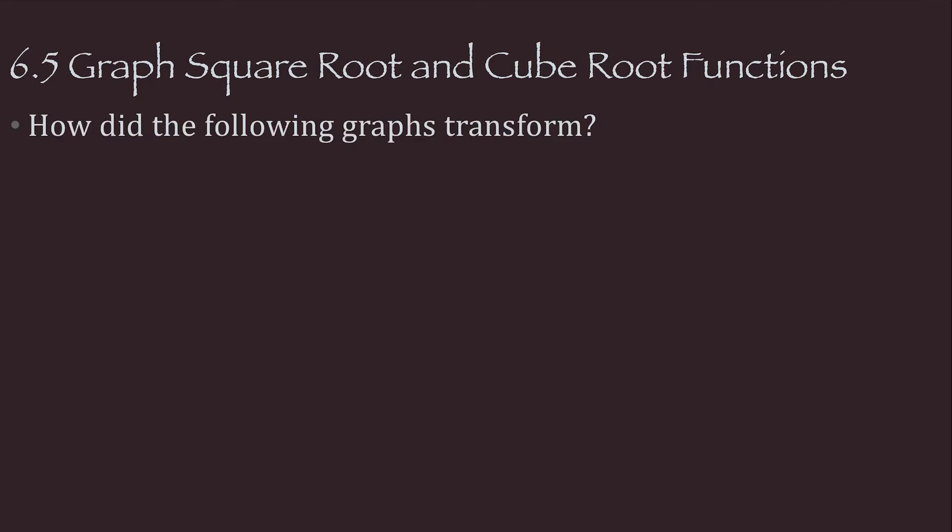So let's look at some transformations here. How did this graph transform? Well, if I compare it to y equals A square root of x minus H plus K, I can see that H is 3, which means it moves right 3, and I can see that K is 4, which means it moves up 4. A happens to be 1, so A doesn't do anything.